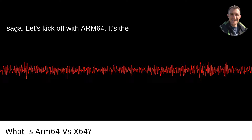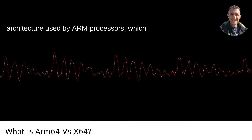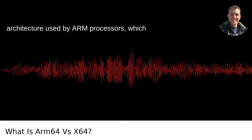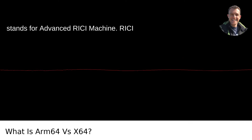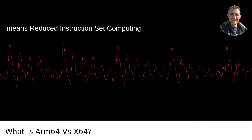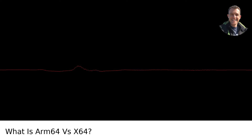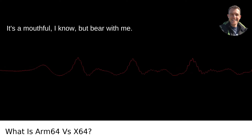Let's kick off with ARM64. It's the architecture used by ARM processors, which stands for Advanced RISC Machine. RISC means reduced instruction set computing. It's a mouthful, I know, but bear with me.